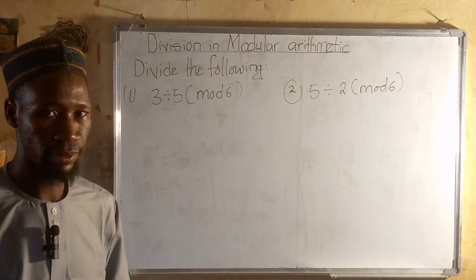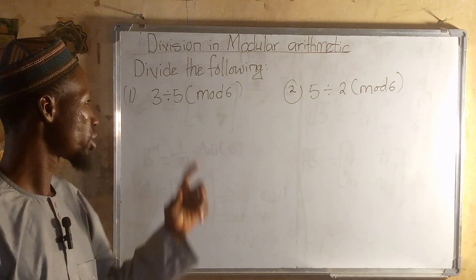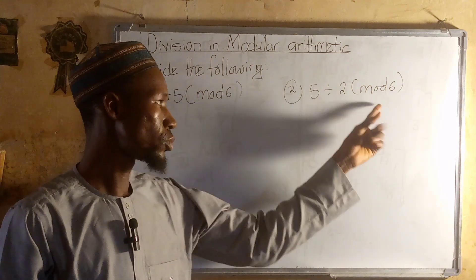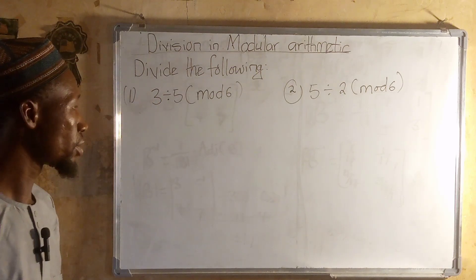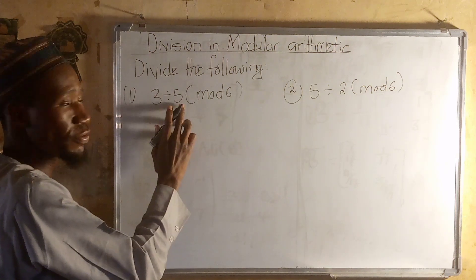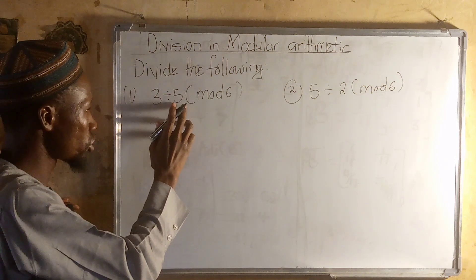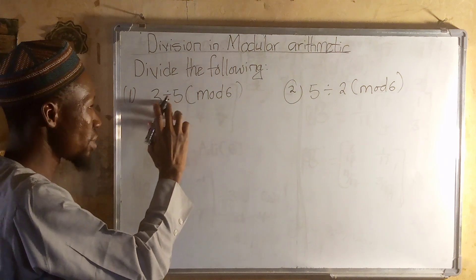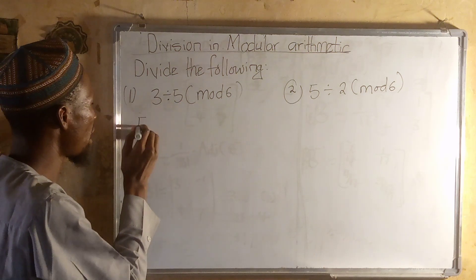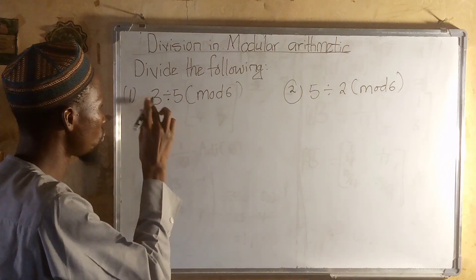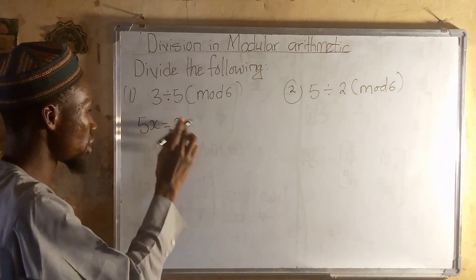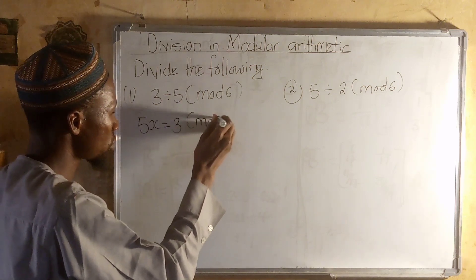We have modular arithmetic division. Number 1: 3 divided by 5 mod 6. Number 2: 5 divided by 2 mod 6. We have 3 divided by 5, so we have 5x is equal to 3 mod 6.